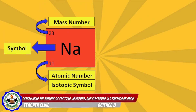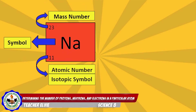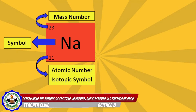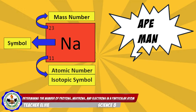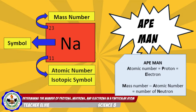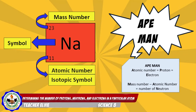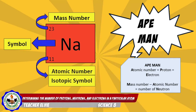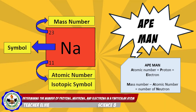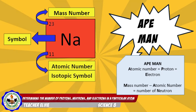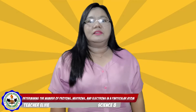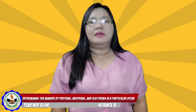Consider the isotopic symbol of an atom of sodium — it has 11 protons, 11 electrons, and 12 neutrons. Consider the Ape-Man mnemonic in determining the number of protons, electrons, and neutrons: atomic number equals the number of protons, which also equals the number of electrons, while mass number minus atomic number equals the number of neutrons. Did you understand it? Now, in order to understand the topic clearly, let us have some exercises. Are you ready?